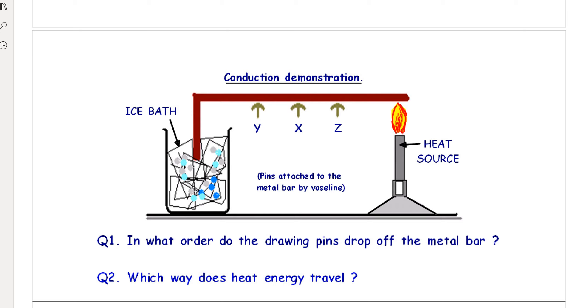So in which order do the pins drop off? The first one to drop, this is question one now, the first one to drop will be Z, followed by X, and finally Y. In which way does the heat travel? The heat travels from the hot region to the cooler one.